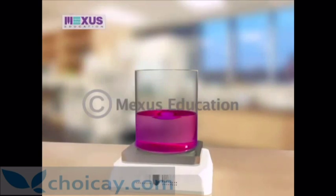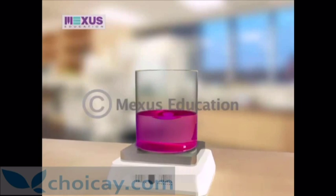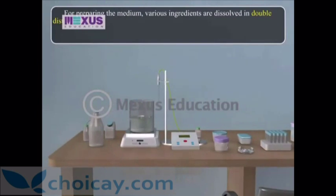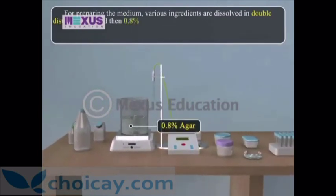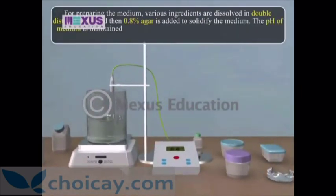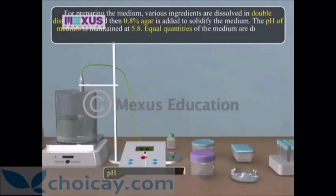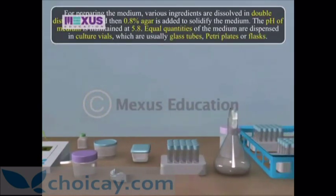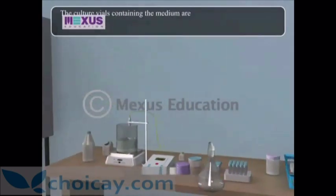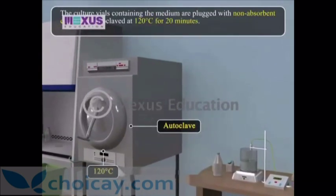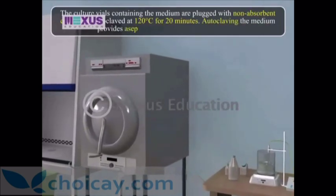Natural plant extracts like coconut milk and fruit juices are also used in the basal medium for growing tissues. Various ingredients are dissolved in double distilled water and then 0.8% agar is added to solidify the medium. The pH of the medium is maintained at 5.8. Equal quantities of the medium are dispensed in culture vials — usually glass tubes, petri plates or flasks — plugged with non-absorbent cotton and autoclaved at 120°C for 20 minutes. Autoclaving the medium provides aseptic conditions within the container.